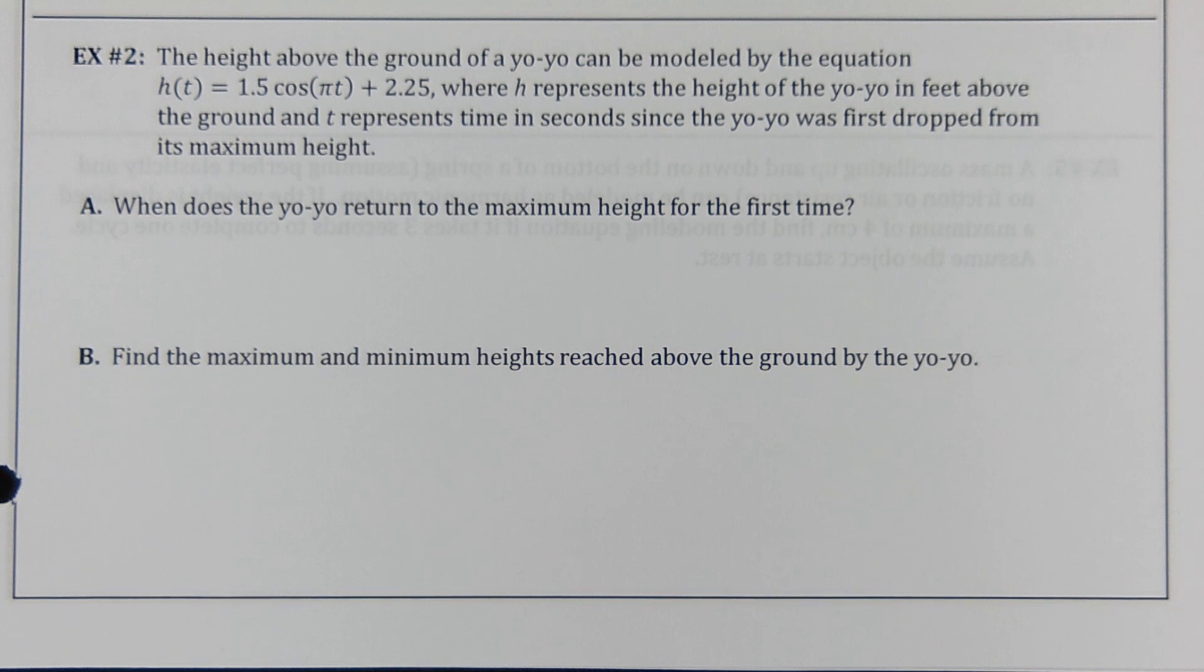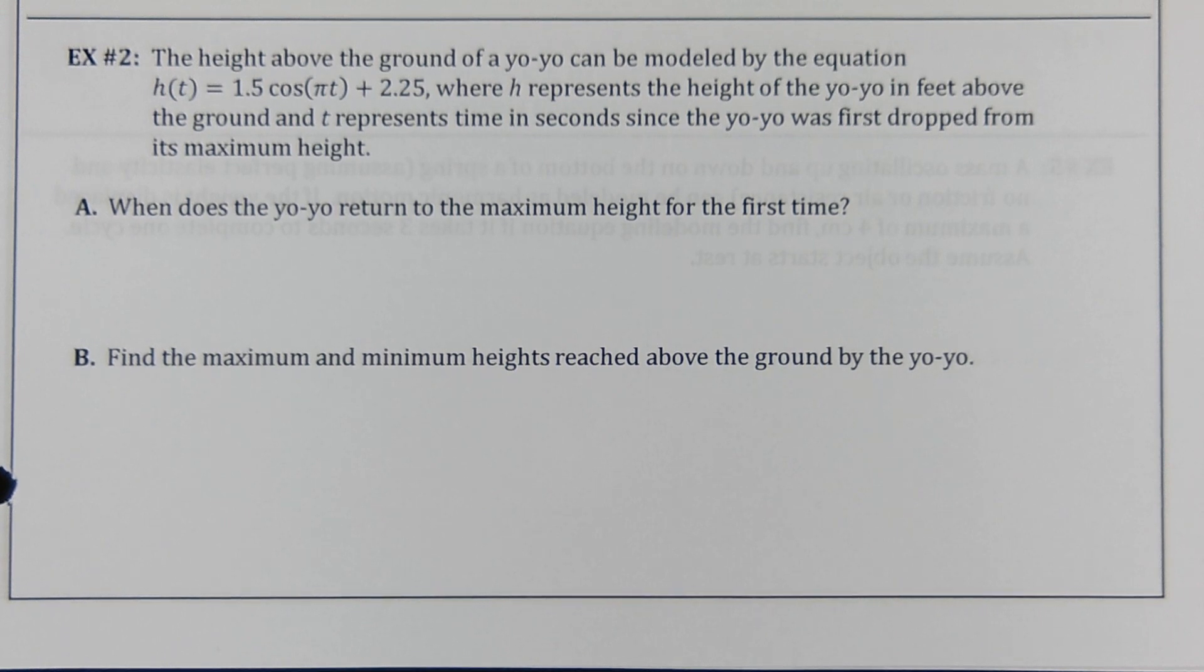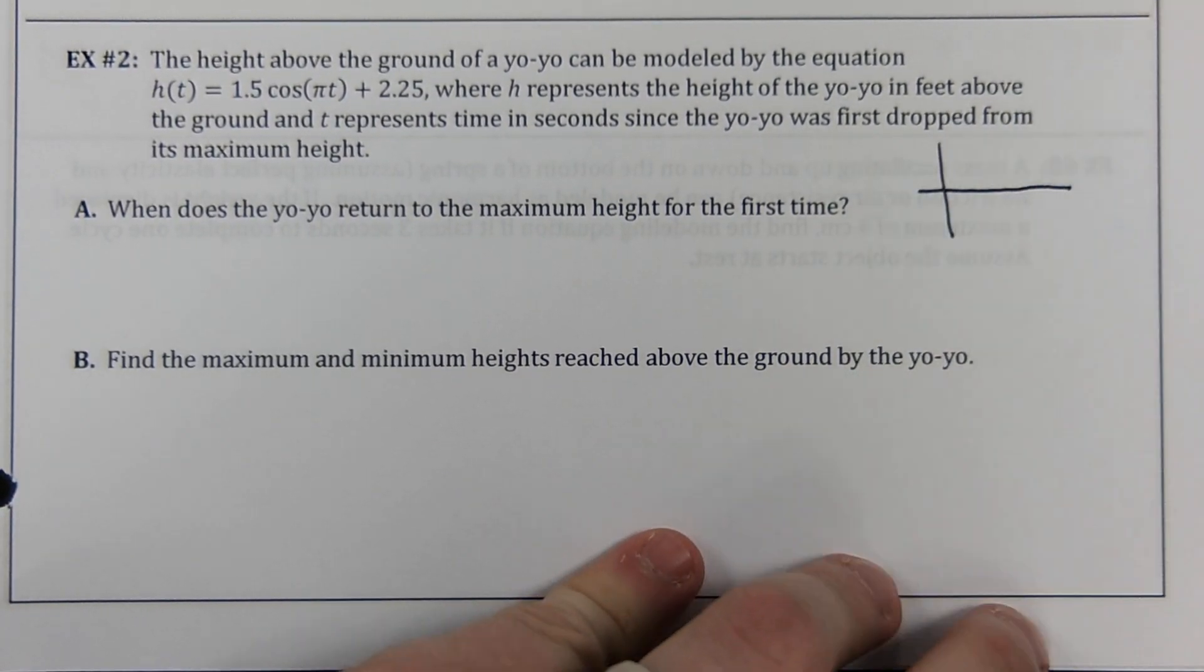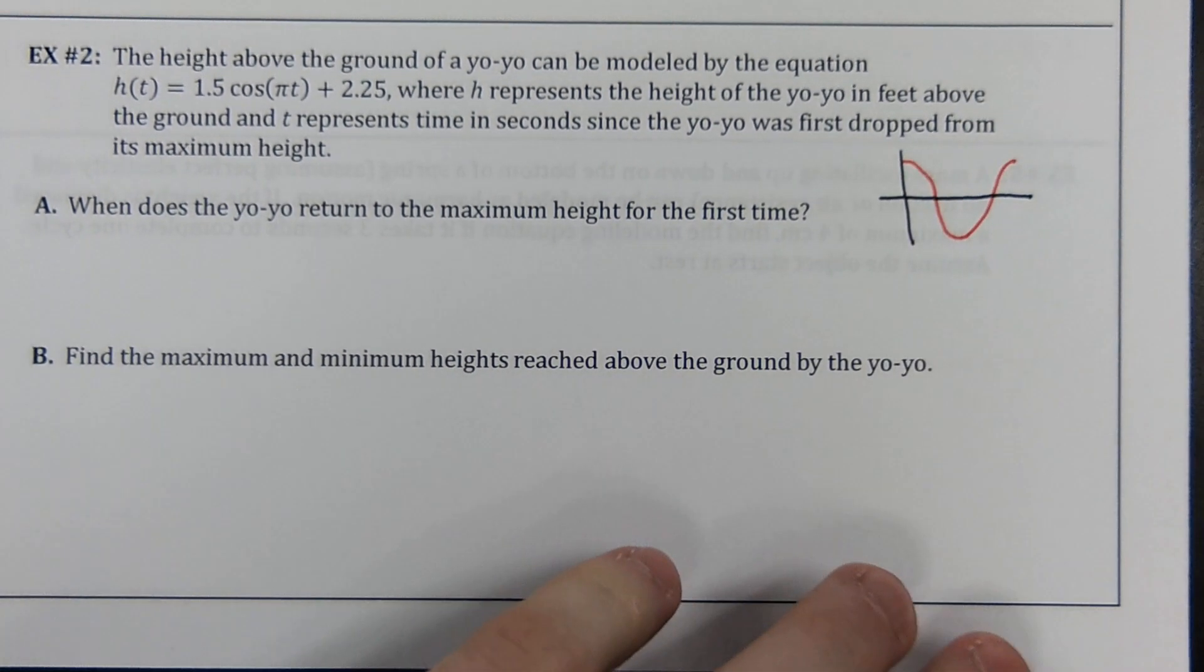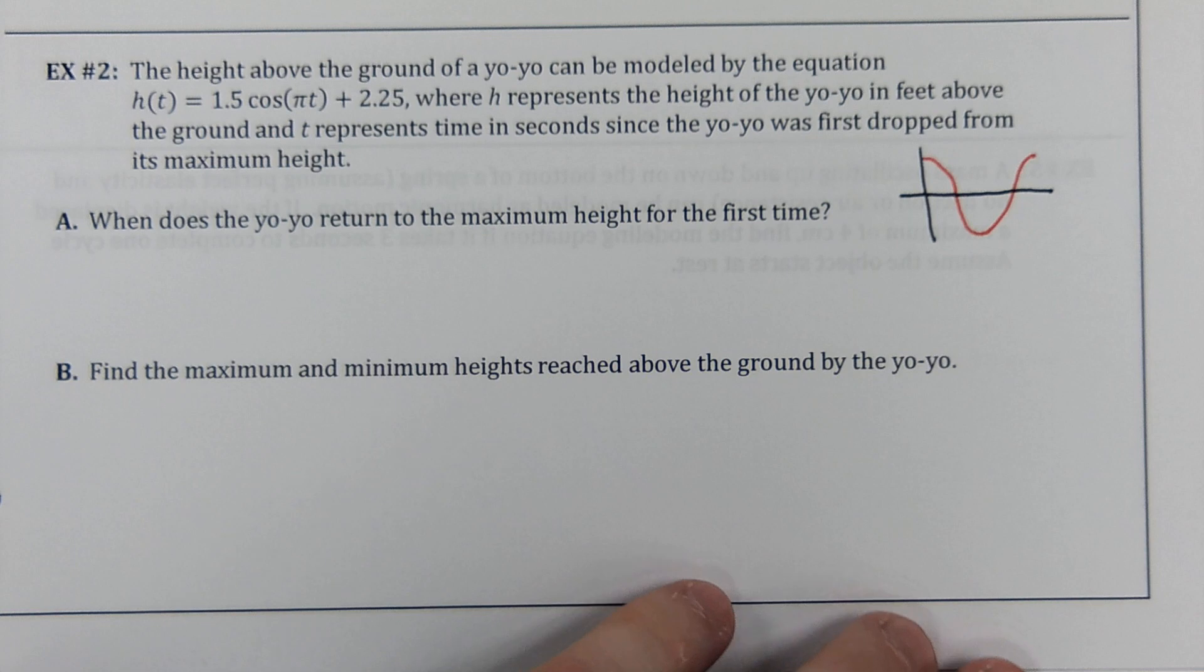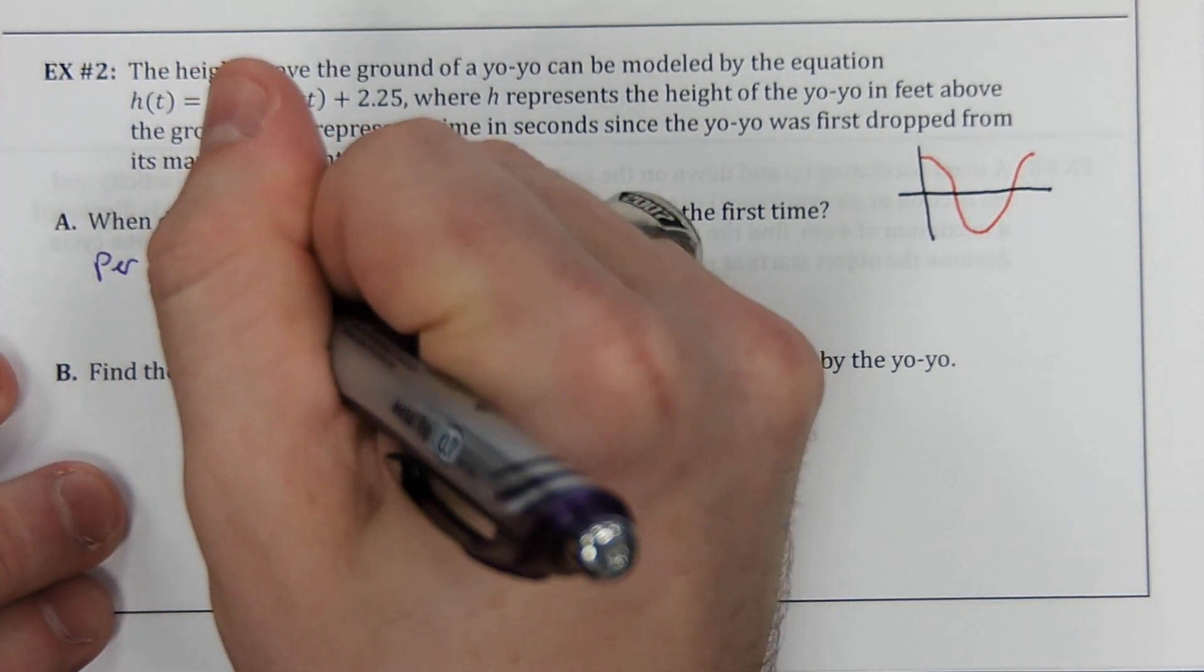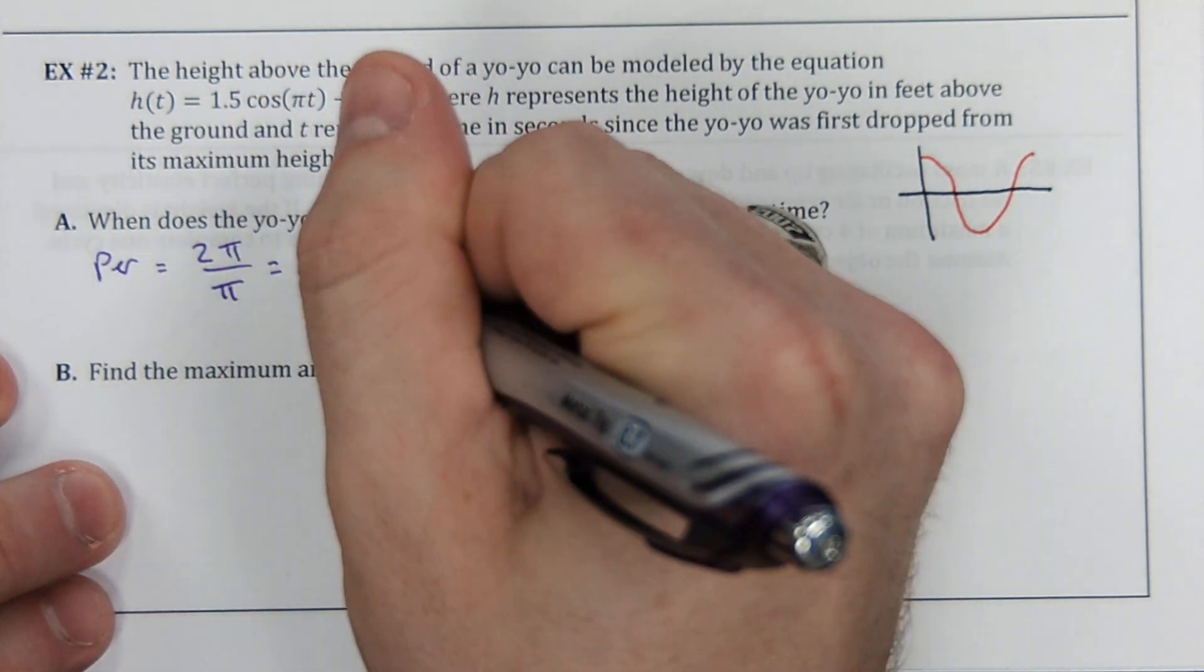Okay. When does the yo-yo return to the maximum height for the first time? What's it asking me to find? The period length. That's what we need to know. Because we know it starts at a maximum, and it's a positive cosine. So to say that it's going to return to its maximum, we just need to know how long this period is. And period is supposed to be 2 pi over B. Our B value is pi. That's two seconds.